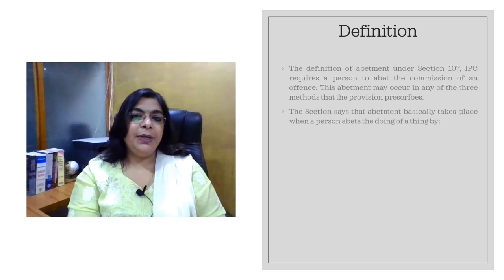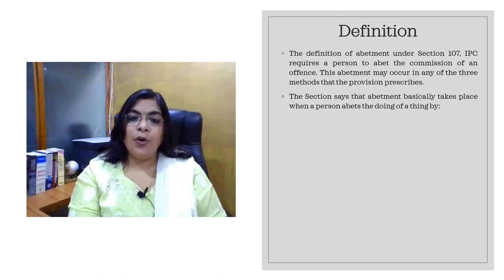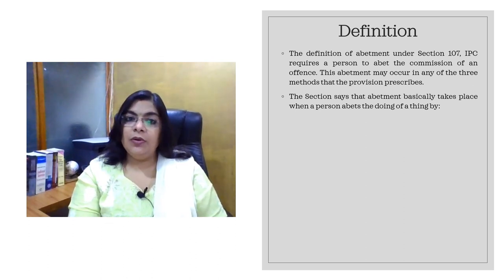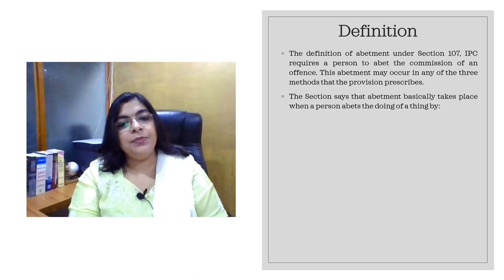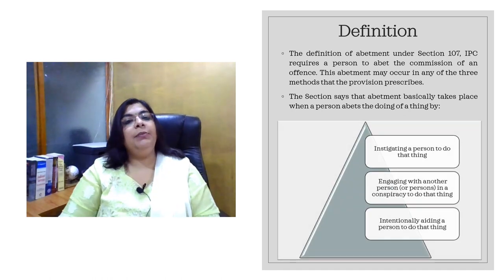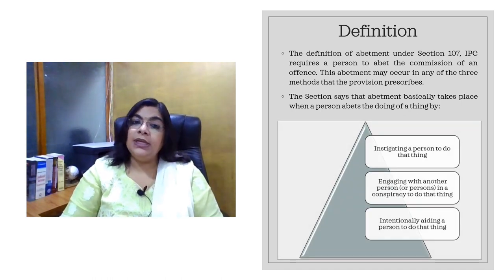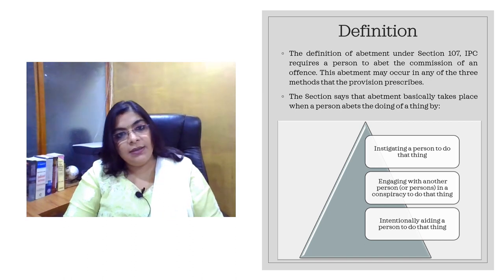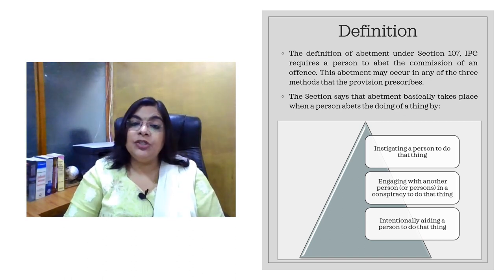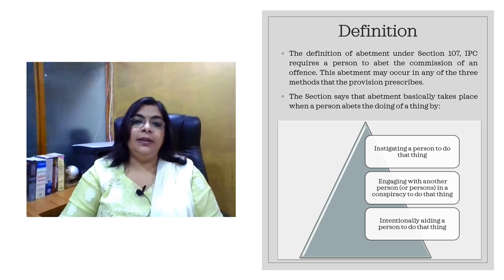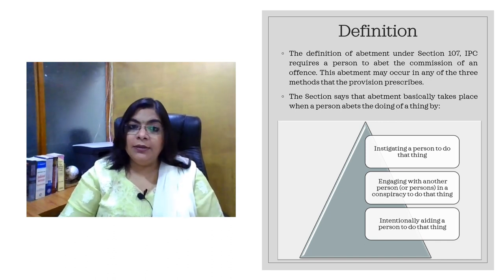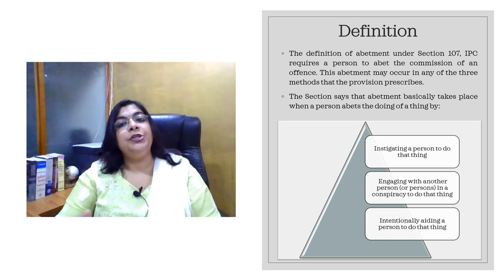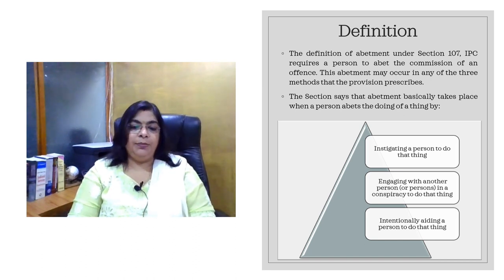The definition of abatement has been described under section 107 of IPC, which says that if a person is abetting any other person for the commission or omission of any act, it comes under the category of abatement. That abatement can be of three types: first is abatement by instigation, second is abatement by conspiracy, and third is abatement by intentional aiding.